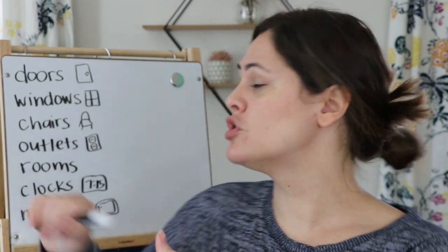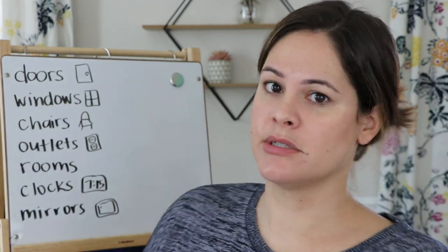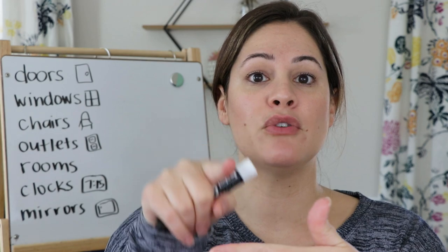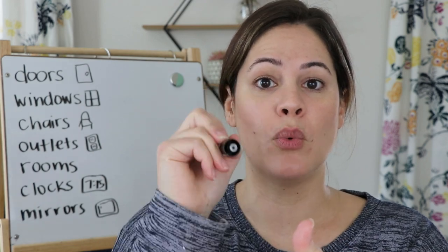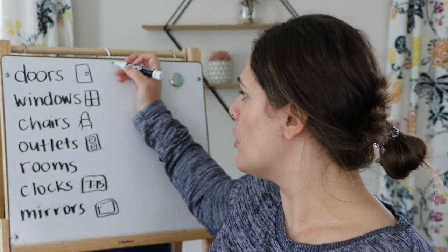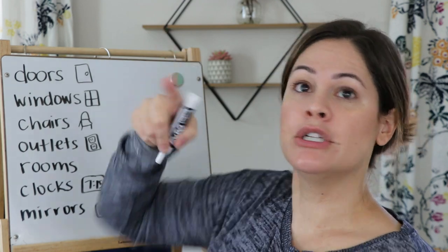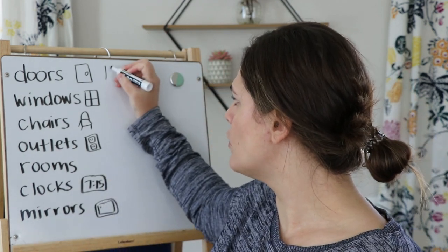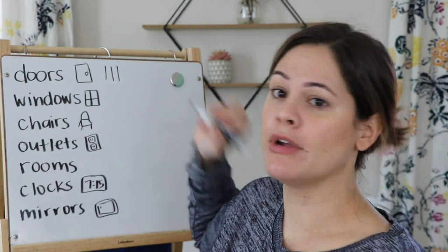When you are collecting data, this is not a race. It is important to remember that you need to do it really slowly and methodically. You might want to take your paper and a pencil, walk around, start in one room, and maybe start with the first category — doors. Every time you find a door in your house you will draw one tally mark. So in this room I have one, two, three doors.